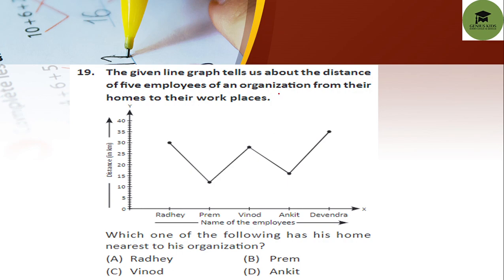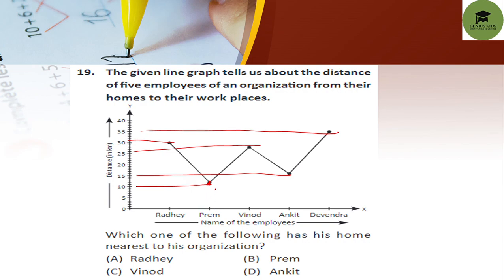Next: the given line graph shows the distance of 5 employees — Radhe, Prem, Vinod, Ankit, and Devendra — from their homes to their workplace. Which one has his home nearest to the organization? Prem's distance is only 10 km, while others are 15, 30, 25, and 35 km. So Prem's home is nearest to the workplace. Option B, Prem, is your correct answer.